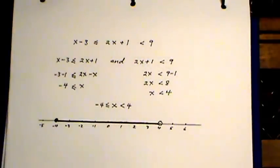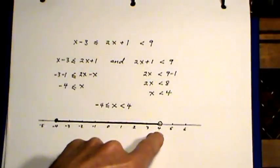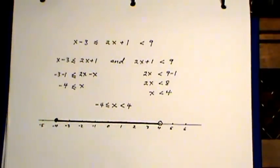And again, on the number line, I've got all x's that are greater than or equal to negative 4 and less than 4. Again, just a part of the number line. Thank you.